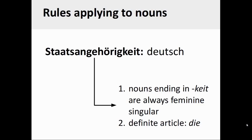The German noun Staatsangehörigkeit, for example, ends in the suffix -keit, which is always a characteristic of feminine singular nouns in German. The definite article of this noun, therefore, must be die.